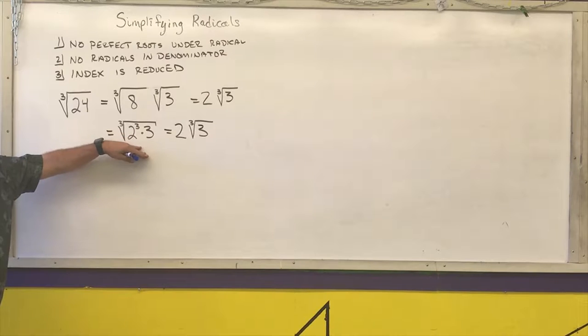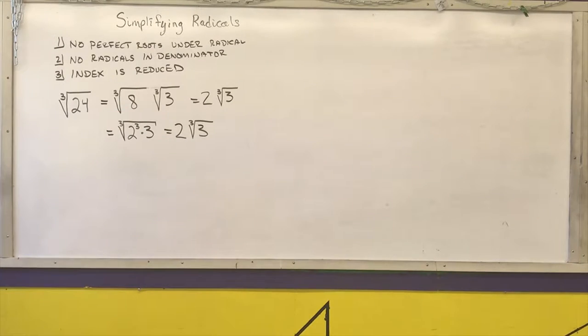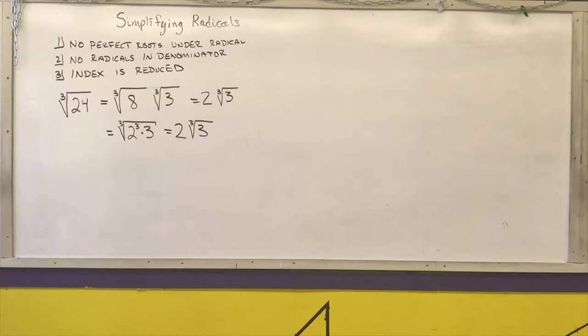So there are two ways to think about doing this problem: one is using the complete prime factorization, the other is knowing your perfect squares and perfect cubes and perfect fourths. At the end I'll show you which ones I expect you to know.